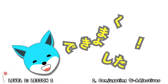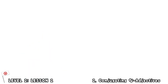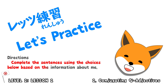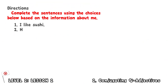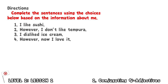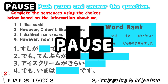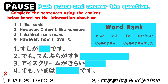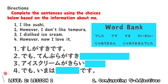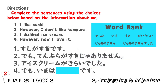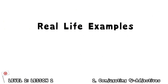Did you get those right? If you did, yoku dekimashita! All right, complete the sentences using the choices below based on the information about me. Were you able to figure out what I liked and disliked? By the way, I don't hate ice cream. Now let's look at some real-life examples of how this is used in daily conversation.